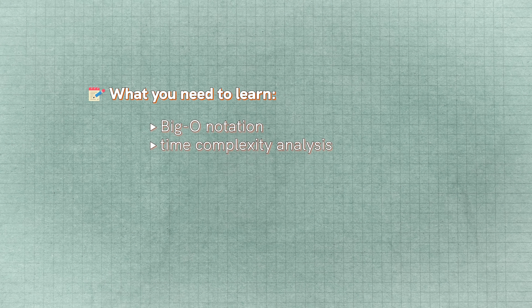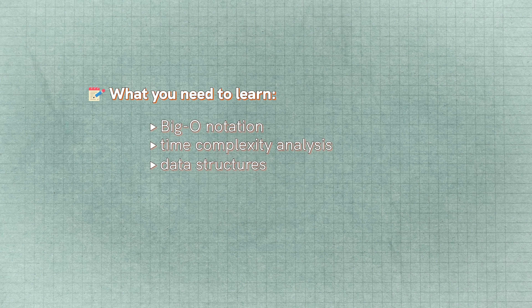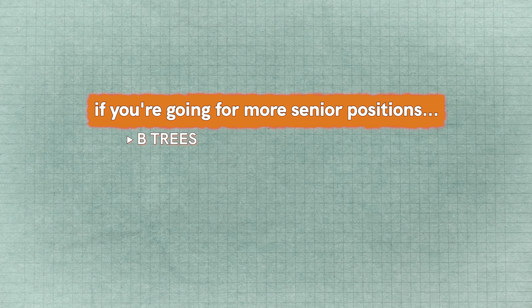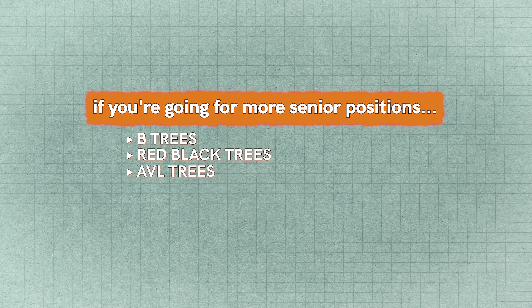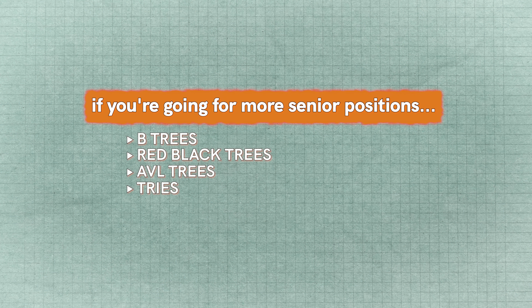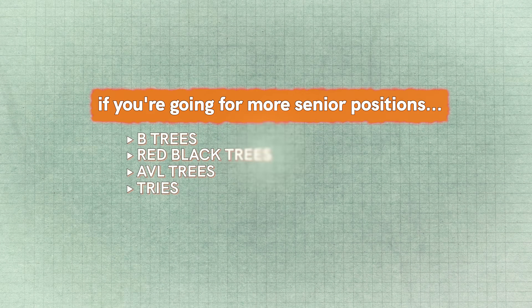I started by learning Big O notation and time complexity analysis — this is the most fundamental thing. Then I started looking at data structures: things like stacks, queues, linked lists, trees, et cetera. I skipped the super complex stuff — things like B-trees, red-black trees, AVL trees, and tries. If you're going for more senior positions, maybe you need to know those, but for internship or entry-level roles, you're probably not going to be quizzed on them.